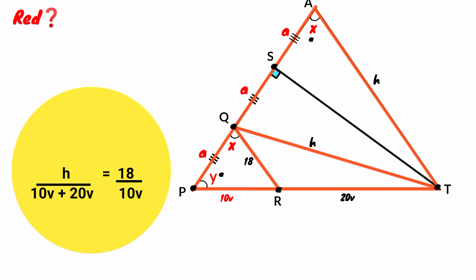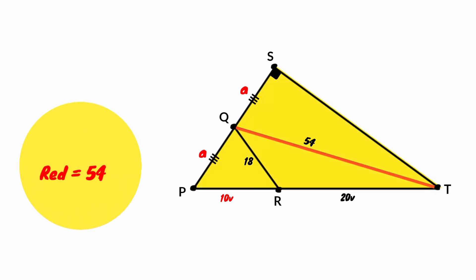10V plus 20V is 30V. 30V divided by 10V is 3. Multiply both sides of the equation by 3. 18 times 3 is 54, so H equals 54. That is, the red line equals 54 units.